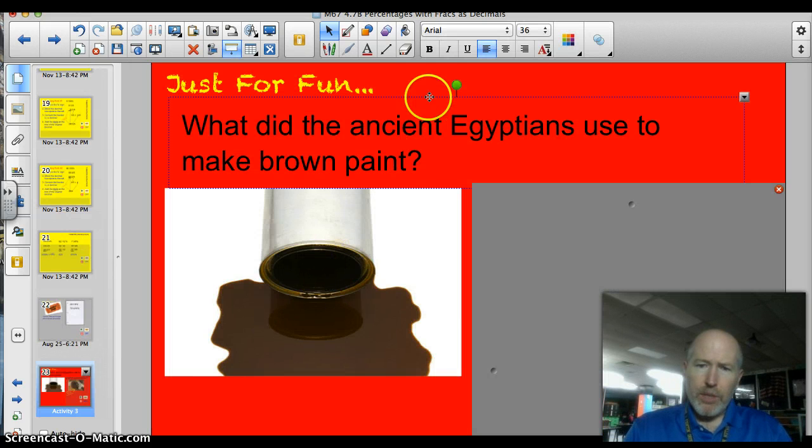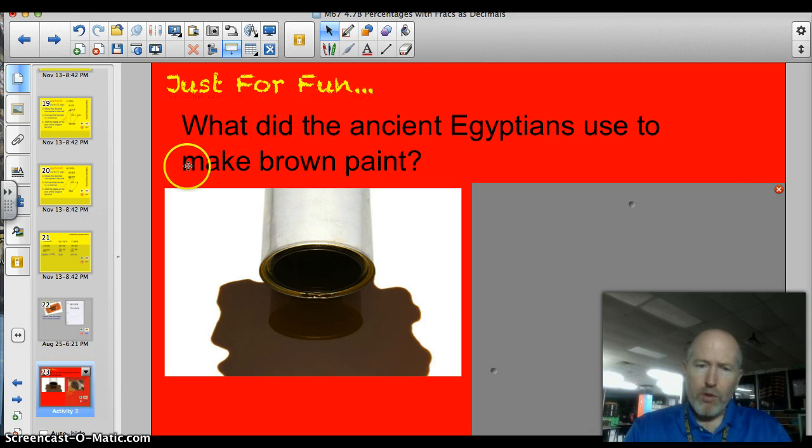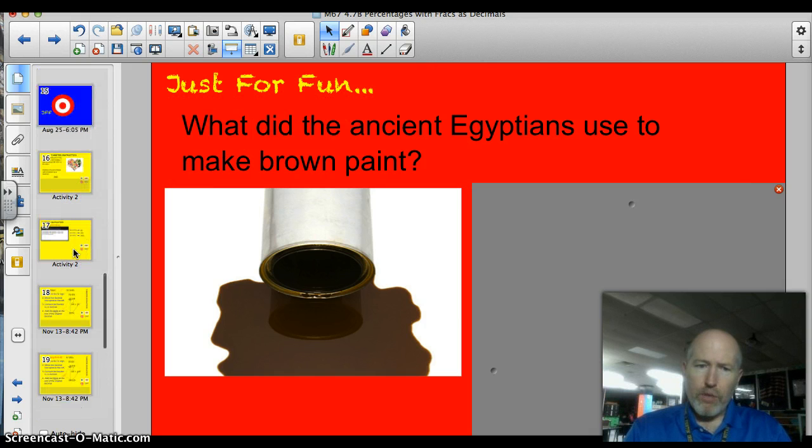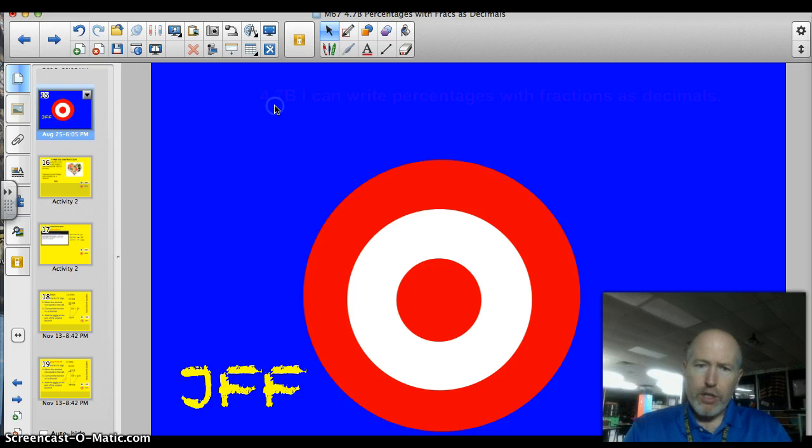What did the ancient Egyptians use to make brown paint? There's your imponderable of the day and we'll be back to it. But first, officially our target today is 4.7b. I can write percentages with fractions as decimals. Let's do this thing.